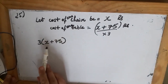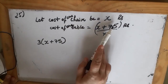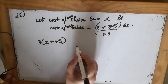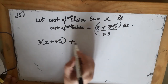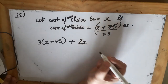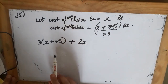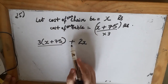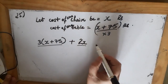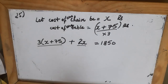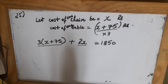The cost of one table is x plus 75, so the cost of 3 tables will be 3 multiplied by (x plus 75). The cost of 2 chairs will be 2x. They are saying the total cost of 3 tables plus the cost of 2 chairs equals Rs. 1850. So this becomes my equation.